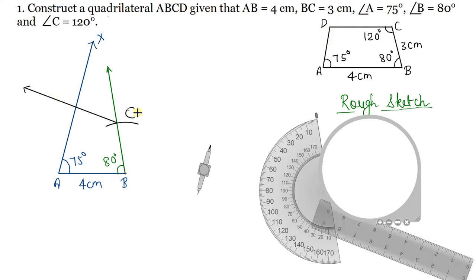We have drawn ray CZ from C. The point of intersection that has appeared is your point D. So we have A, B, C, D — the quadrilateral construction is complete, and this is your required quadrilateral.